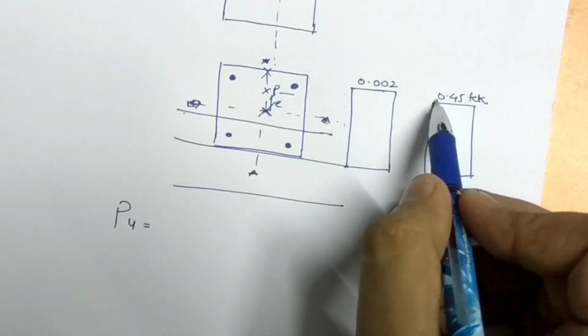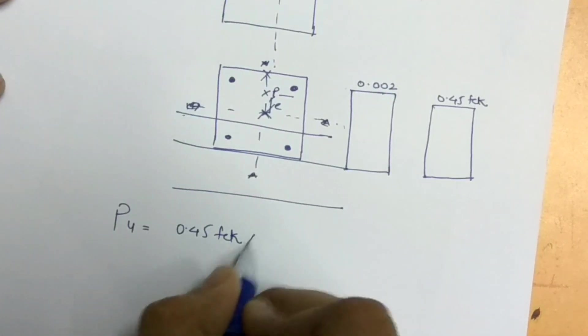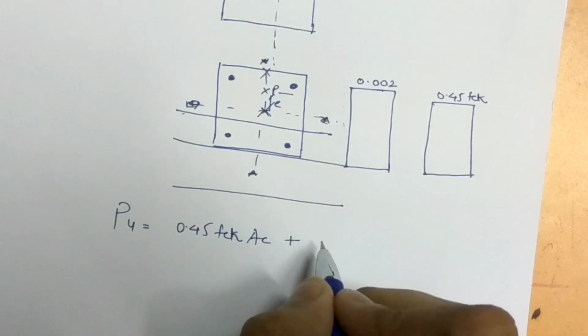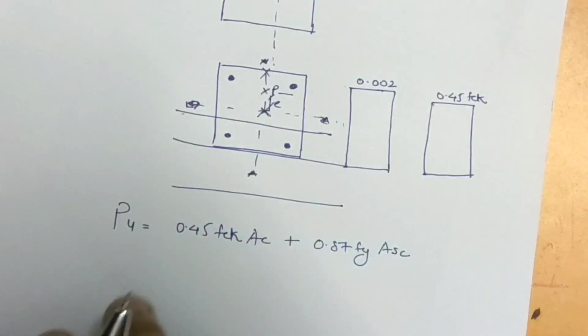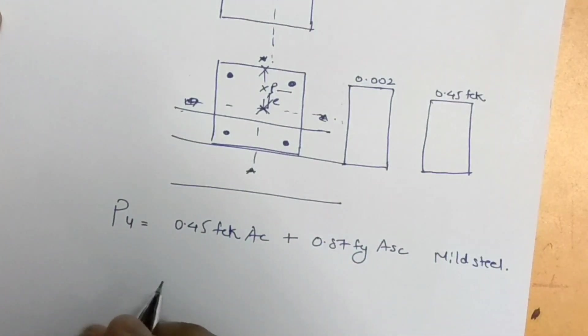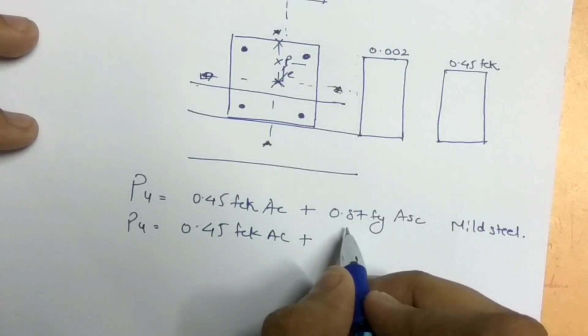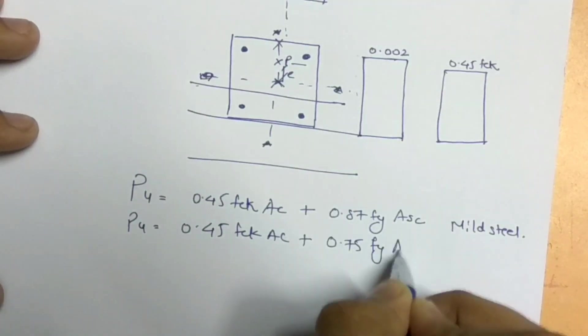In this case, the stress diagram is multiplied by the concrete area. So that gives 0.45 fck times Ac. In LSM design, we use 0.87 fy times the steel area Asc. Here, for mild steel, if we use tor steel, we get 0.45 fck times Ac plus, dividing by 1.15, we get 0.75 fy times Asc.